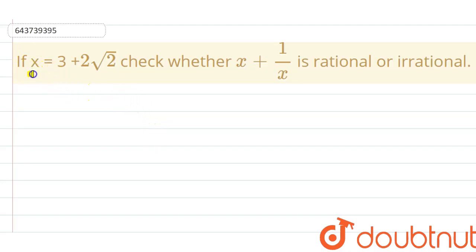If x is equals to 3 plus 2 root 2, then we have to check whether x plus 1 upon x is rational or irrational. So first of all, as x is given here 3 plus 2 root 2, we will find out the value of 1 upon x.